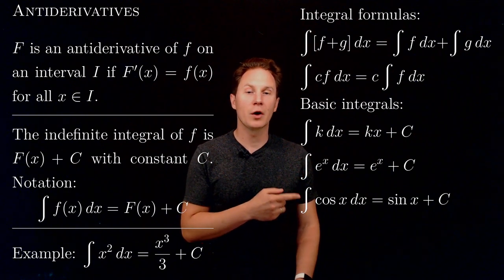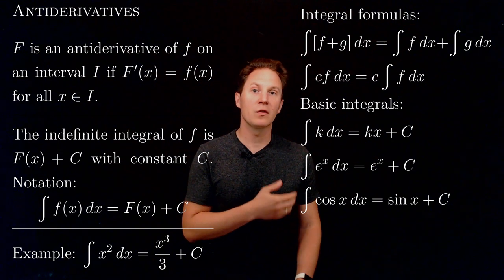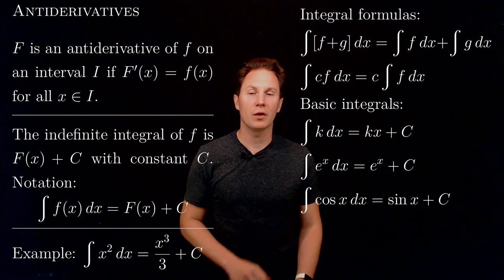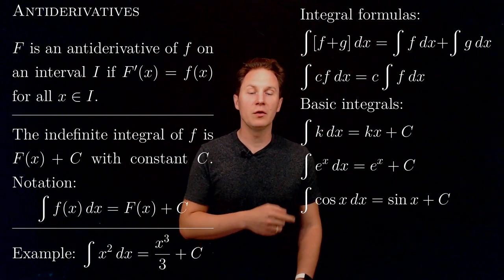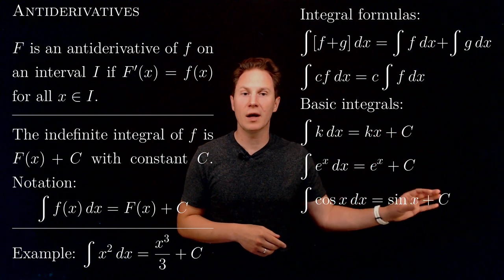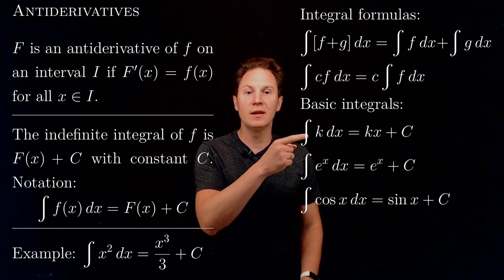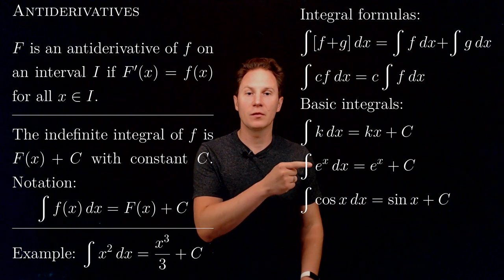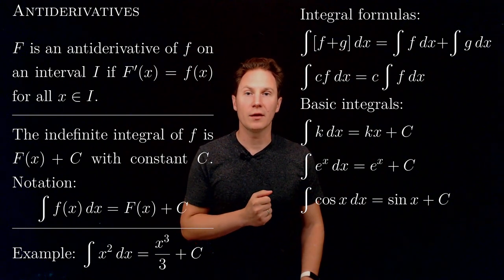The indefinite integral of the cosine of x with respect to x is the sine of x plus C. You can check all three of these formulas by simply differentiating the right-hand side and seeing that you indeed get what's after the integral sign in each case.